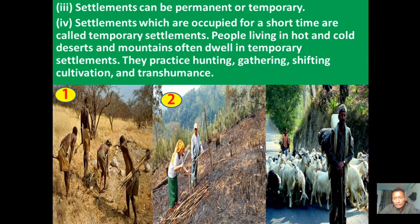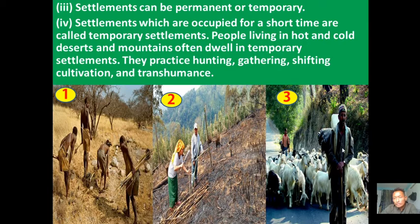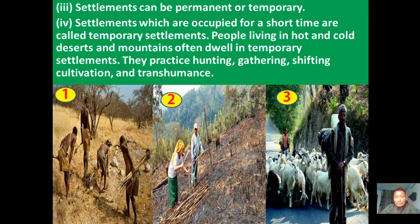The third activity is transhumance — the life of Gaddi people in Himalayan regions. Gaddi people move seasonally: during summer they move up to mountainous regions for better grass and water for their sheep and livestock, and during winter they move down to the plains. This seasonal movement of herders with their animals is called transhumance.